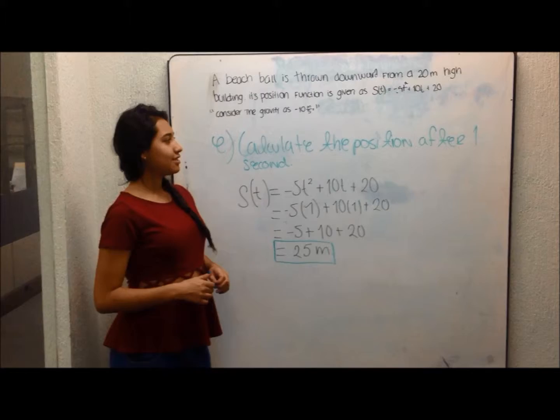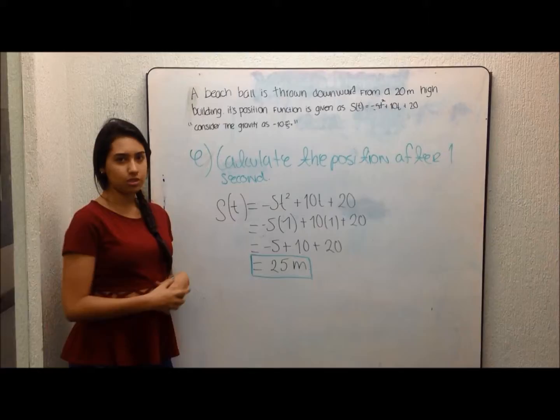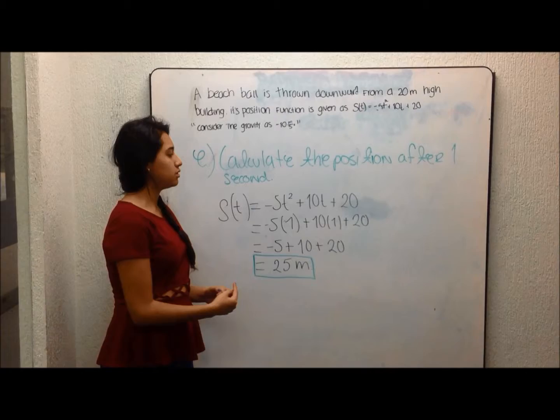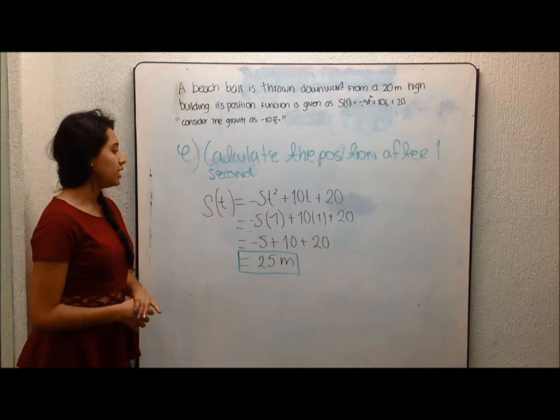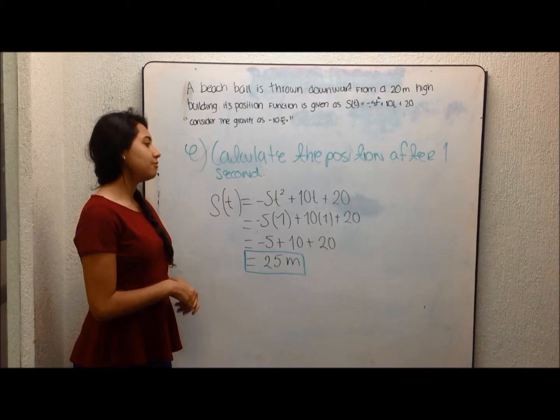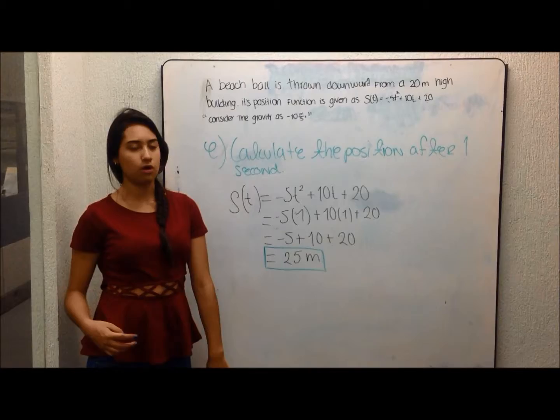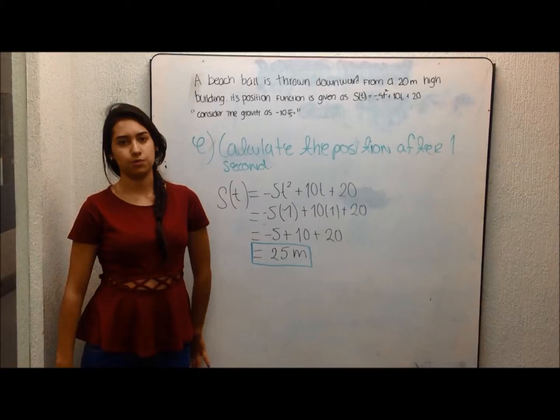Point p asks to calculate the position after 1 second. Using the function, I substitute t = 1: s(1) = -5(1)² + 10(1) + 20 = -5 + 10 + 20. The result is 25 meters. That is the position after 1 second.